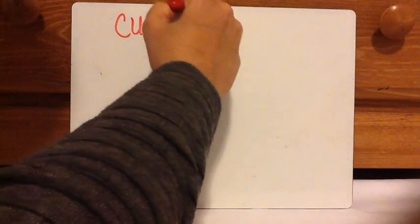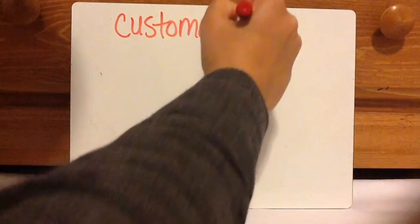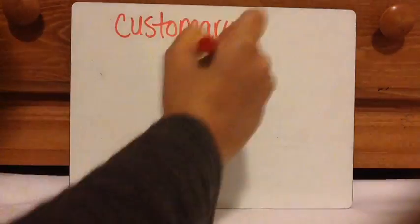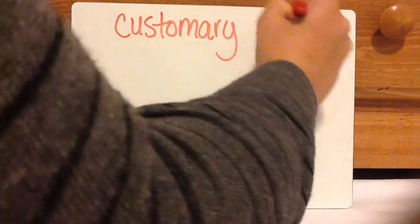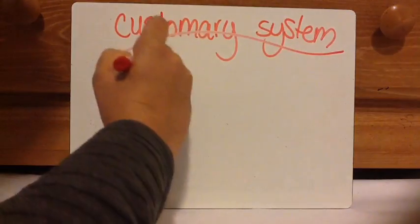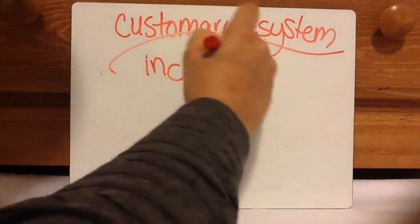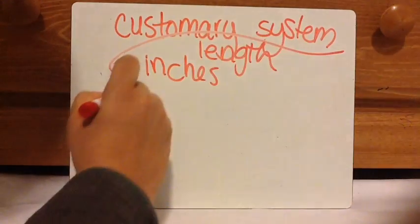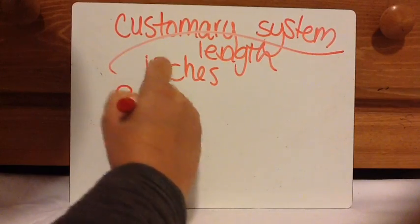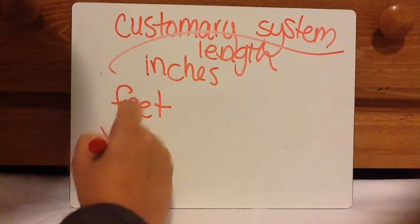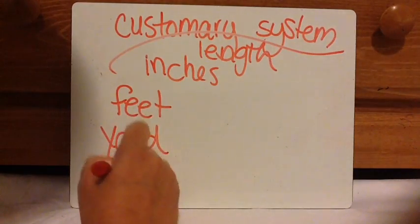The first thing I'm going to go over is the customary system. As I've explained in my other videos, the customary system is used in the United States. So for length, we have inches, feet, yard, and miles.